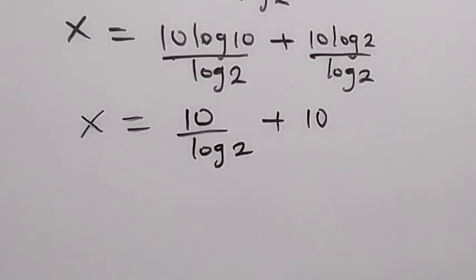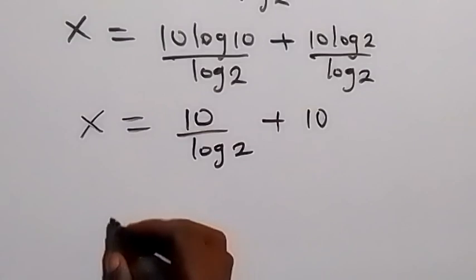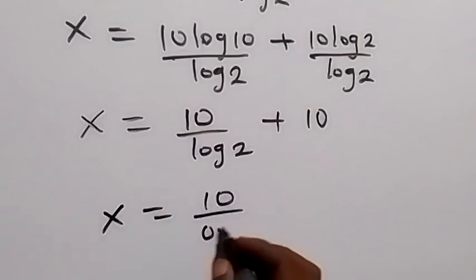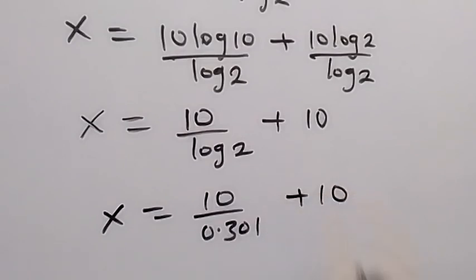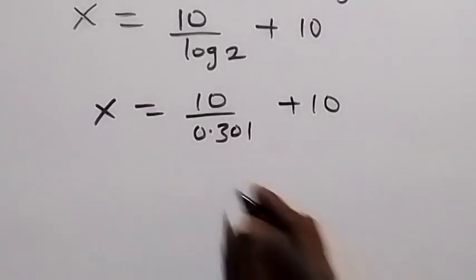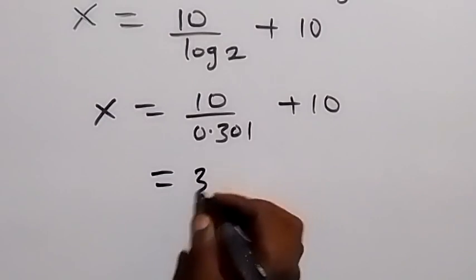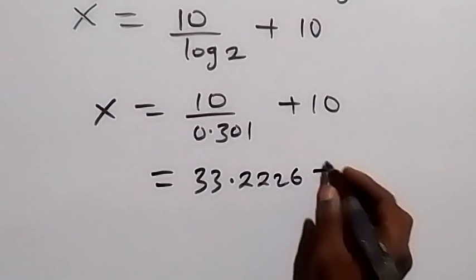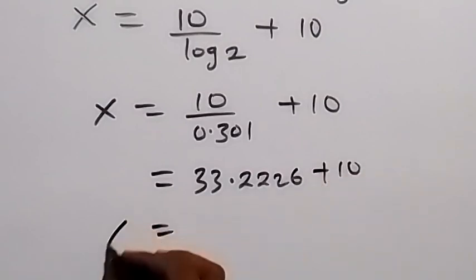Then we can substitute the value of log 2, that is 0.301. So x will now be equals to 10 over 0.301 plus 10. And when we divide this, we have 10 over 0.301, this gives us 33.2226 then plus 10.